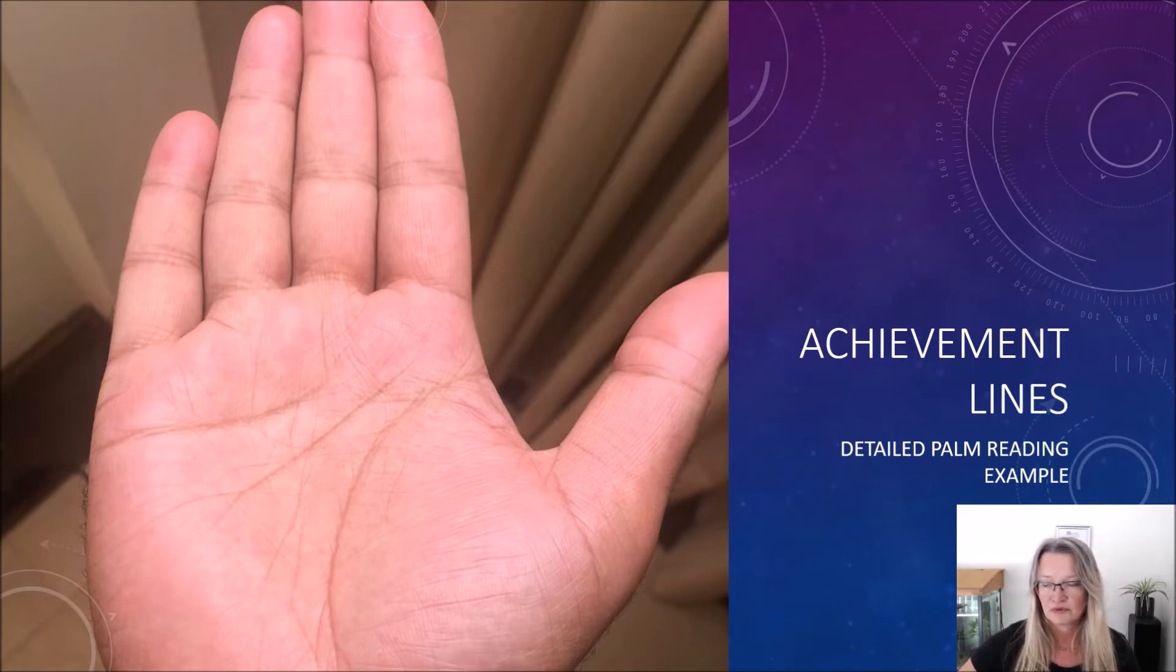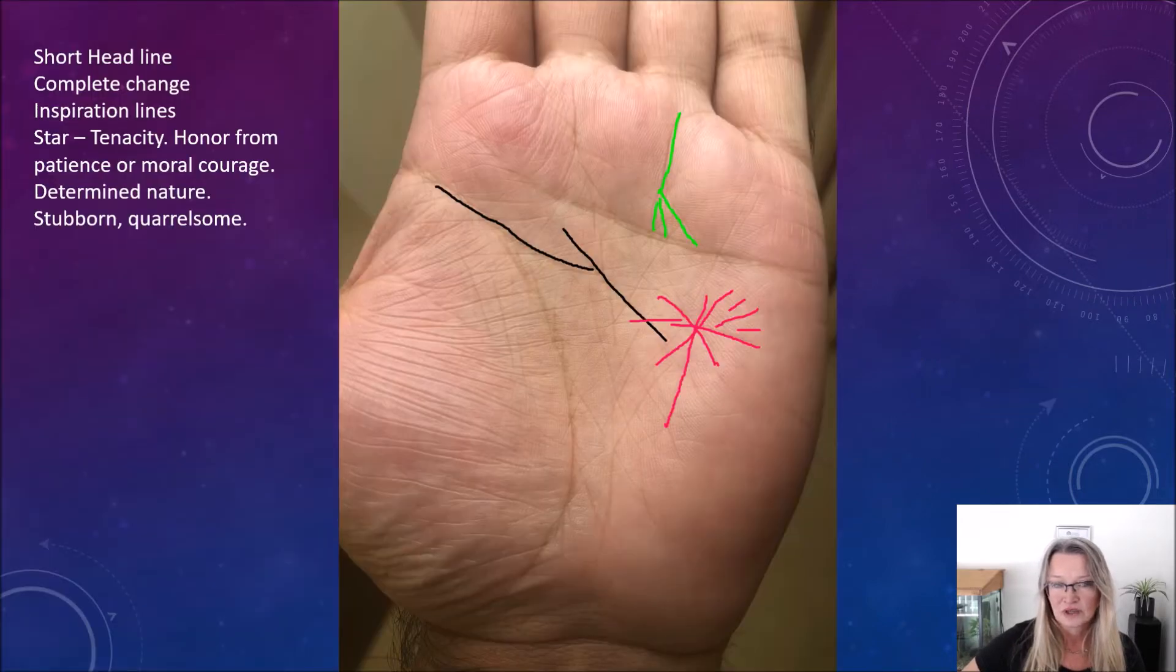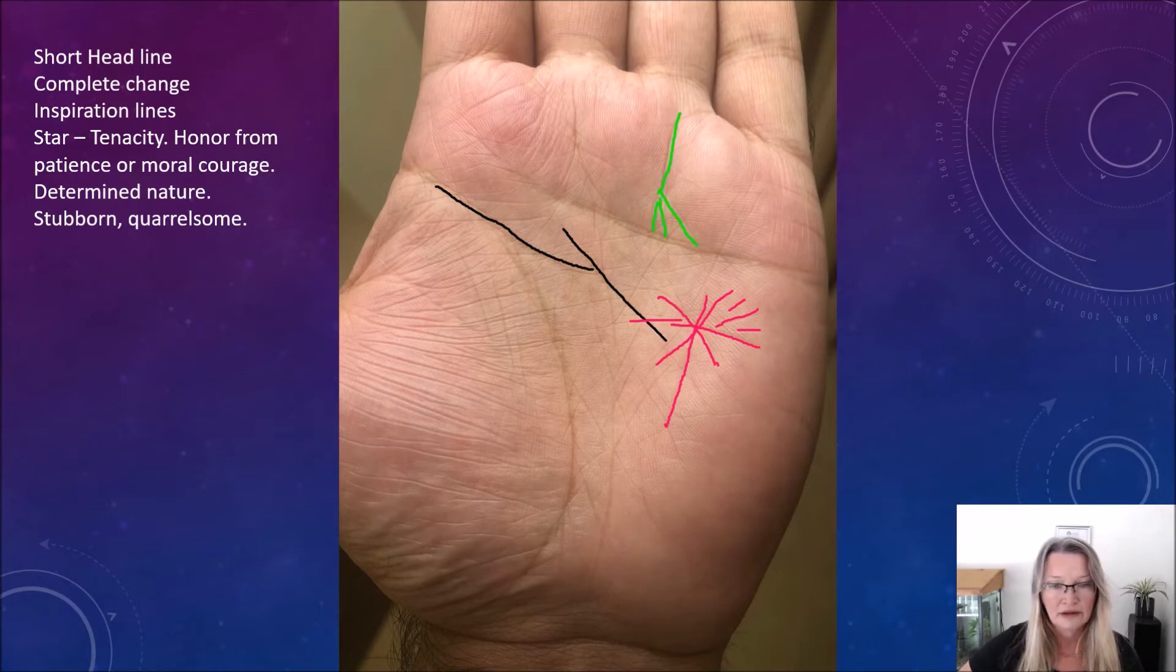So today's example reading, I'm going to do a quick look at the left hand first, but I'm mainly going to be reading from the right hand, which looks like the dominant hand. So here's the left hand of this 40 year old male who is a lawyer.